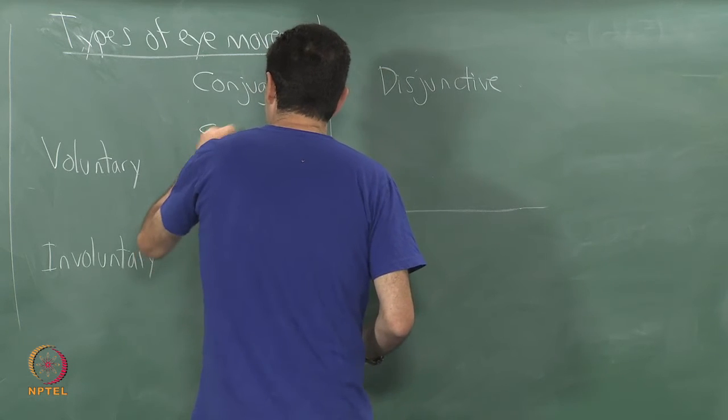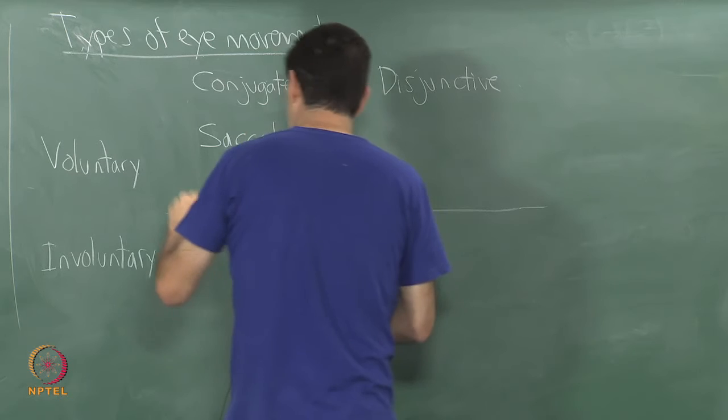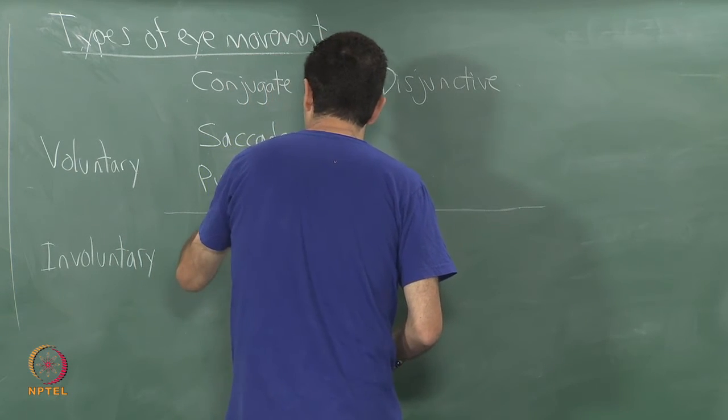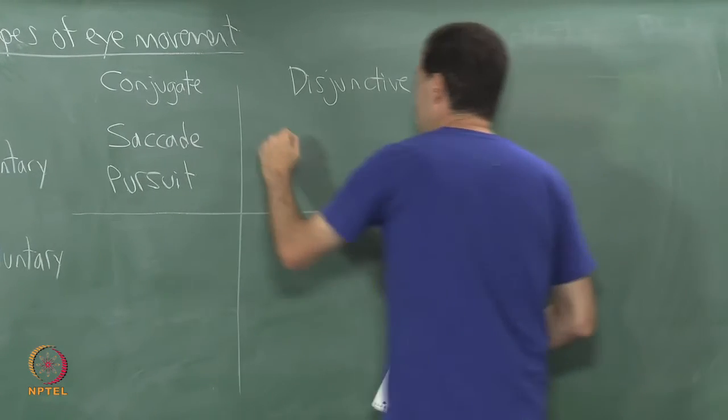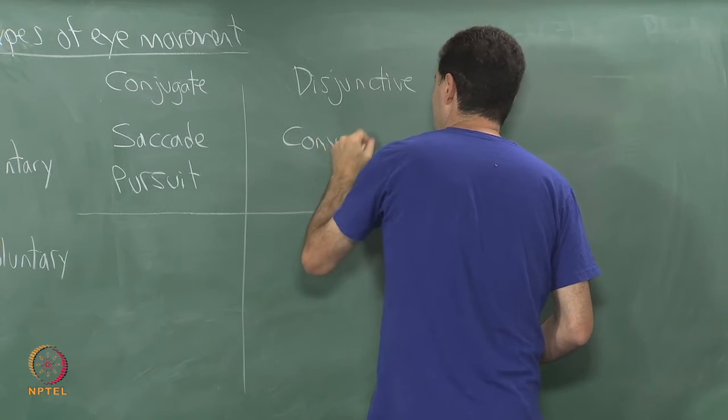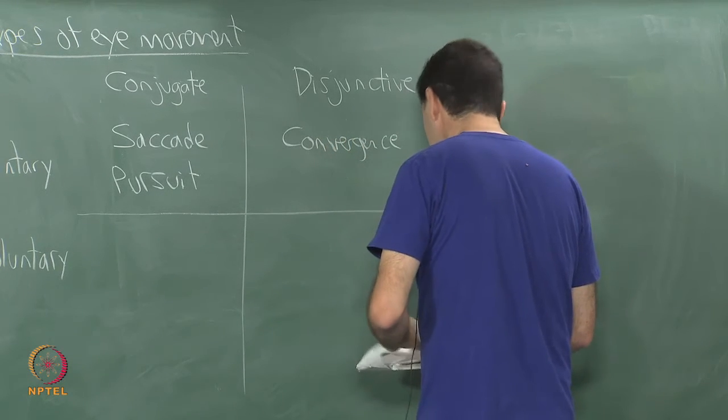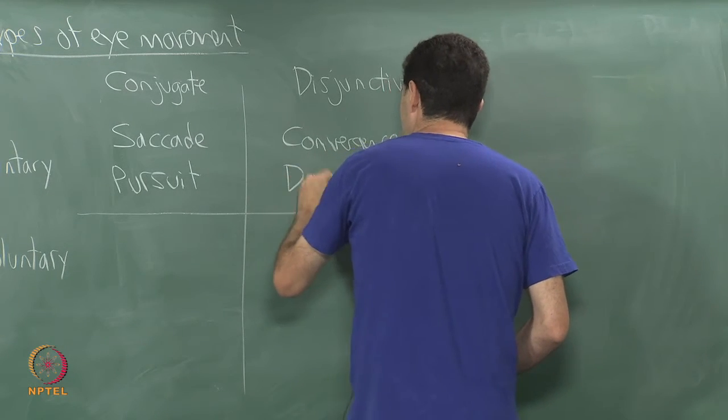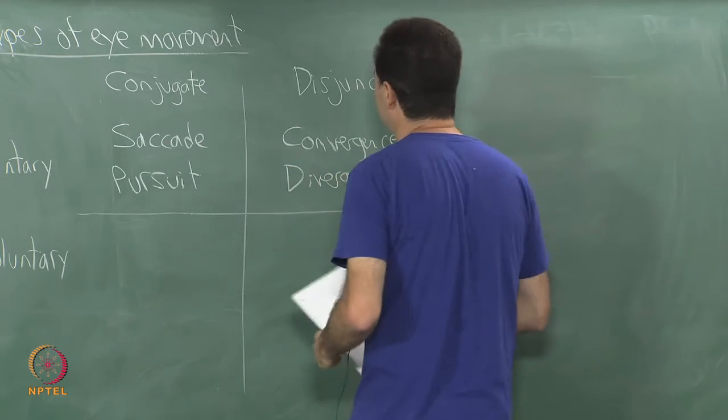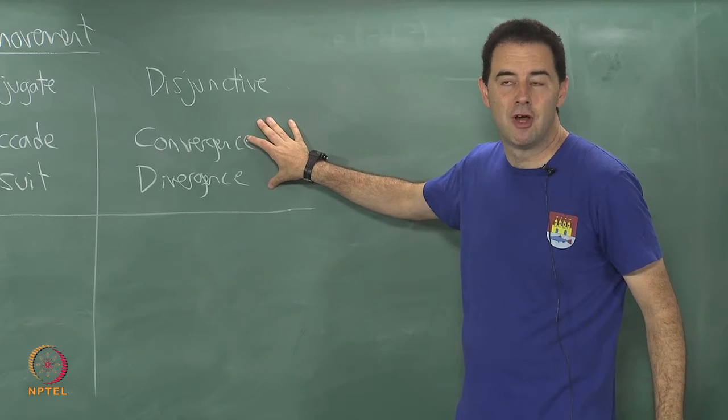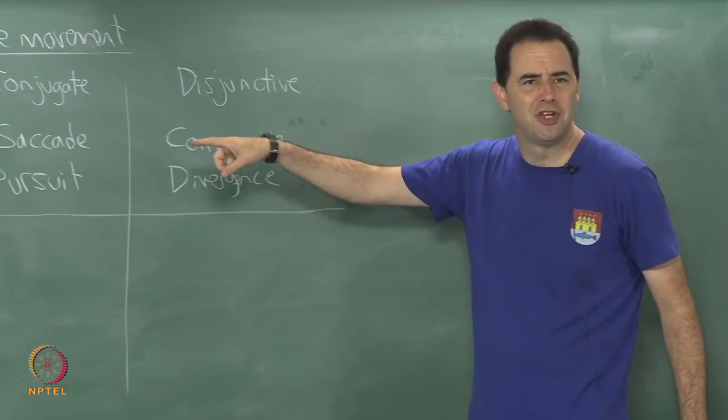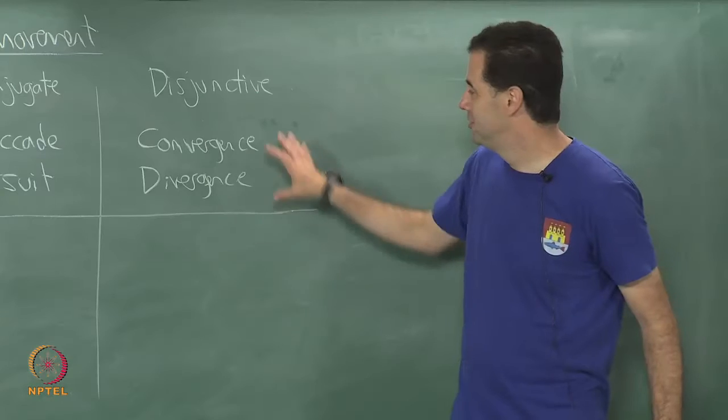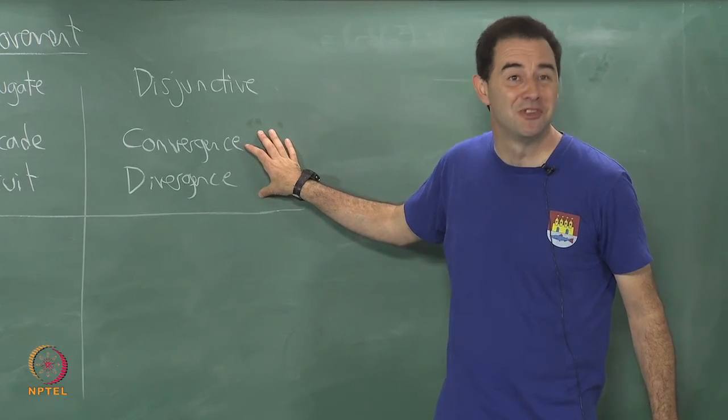So on the conjugate side we have saccades and pursuit sometimes called smooth pursuit. On the disjunctive side we have convergence which can be coupled together with the other one that goes here which is divergence, they are just opposites of the same thing. These are the motions that happen when we are trying to match stereo, maybe that looks like it should be conjugate because they are trying to come together to make stereo. But geometrically in terms of the transforms that are being applied these are different transforms right, they are like mirror images.